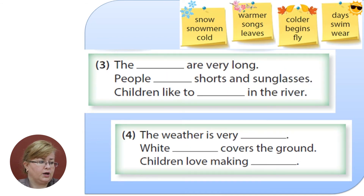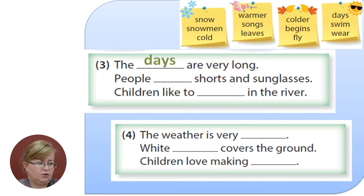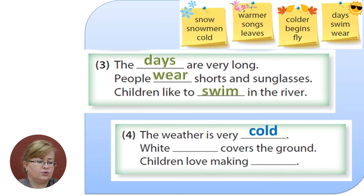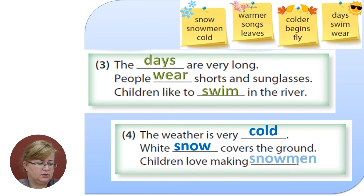We have two more seasons and two leaflets at the top of the screen. The days are very long. People wear shorts and sunglasses. Children like to swim in the river. Yes — this is your favorite season, this is summer. And the last one: of course it's about winter. The weather is very cold, white snow covers the ground, and children love making snowmen. Do you love making snowmen? I'm sure you do.